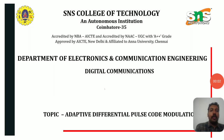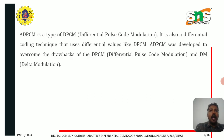Today we are going to see about Adaptive Differential Pulse Code Modulation in digital communications. Adaptive Differential Pulse Code Modulation, ADPCM, is a type of differential pulse code modulation. It is also a differential coding technique that uses differential values like DPCM. ADPCM was developed to overcome the drawbacks of DPCM and delta modulation.